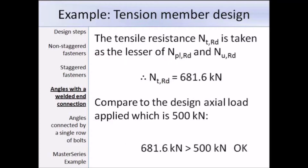The overall tensile resistance is taken as the lesser of the design plastic resistance and the design ultimate resistance of the net cross-sectional area. In this case the smaller of the two is the design plastic resistance, and that's equal to 681.6kN. The last thing we need to check is whether the resistance is larger than the design axial load. The design axial load is 500kN and our resistance is 681.6kN, therefore this section is acceptable.